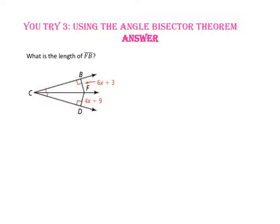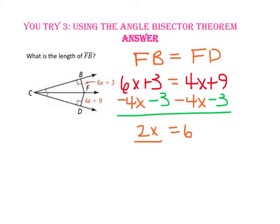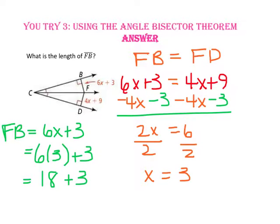Pause the video and do you try number 3. What is the length of segment FB? Point F is on the angle bisector of angle BCD, and segment FB and segment FD are both perpendicular to the sides of the angle, so 6X plus 3 equals 4X plus 9. Subtract 4X from both sides and subtract 3 from both sides to get 2X equals 6, then divide by 2, so X equals 3. Substituting 3 into 6X plus 3: the length of segment FB is 18 plus 3, or 21. Check: 4 times 3 is 12, plus 9 is 21 — correct.